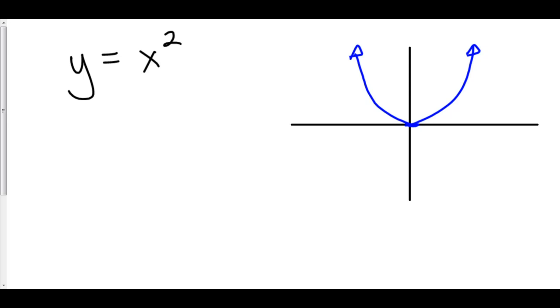How do we use the definition of the derivative to actually find the derivative of functions? For example, if I had y equals x squared, how could we use that definition of the derivative, namely the limit as h approaches 0 of f of x plus h minus f of x all over h?